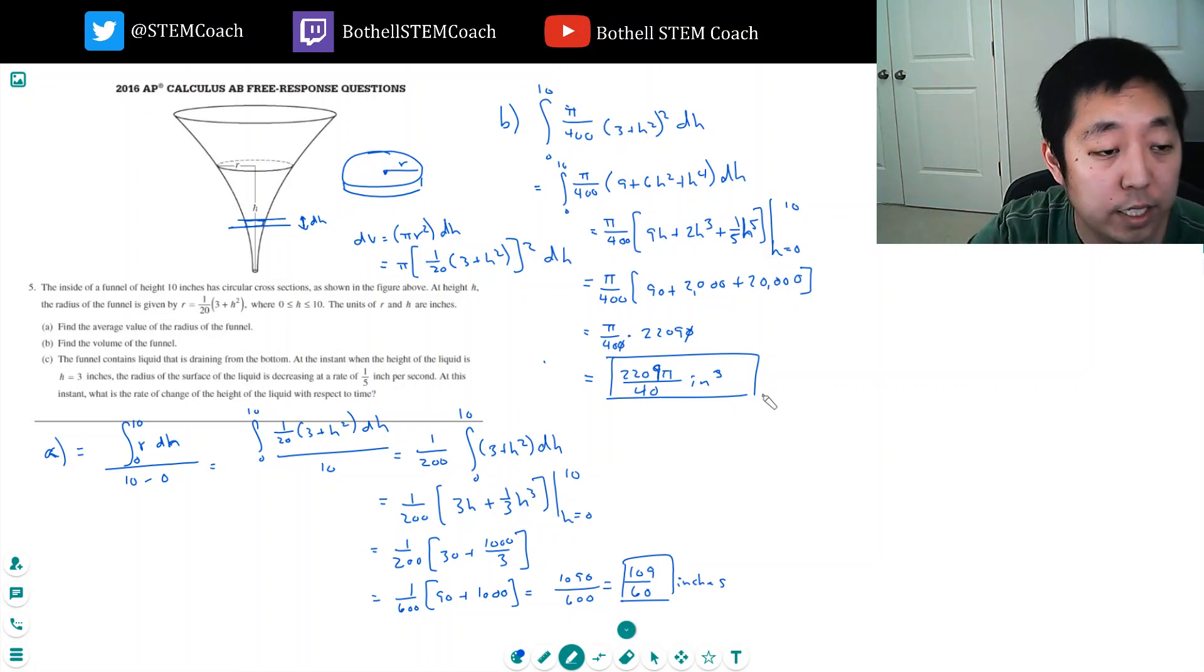C. The funnel contains a liquid that is draining from the bottom. At the instant when the height of the liquid is h equals 3 inches, the radius of the surface of the liquid is decreasing at a rate of 1/5 inch. At this instant, what is the rate of change in the height of the liquid with respect to time? This is a rate of change problem.